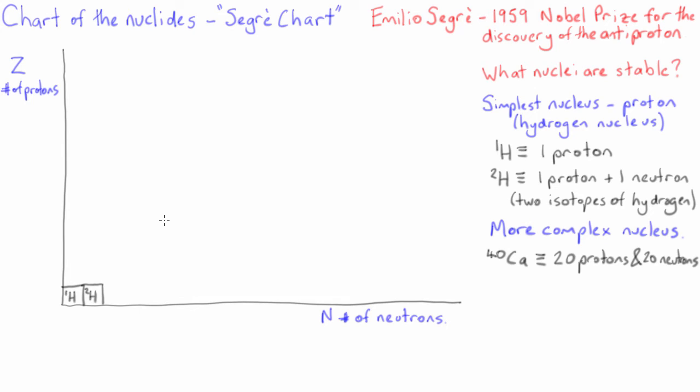Calcium 40 is also stable, and we can put it on the Segre chart at Z equals 20 and N equals 20.